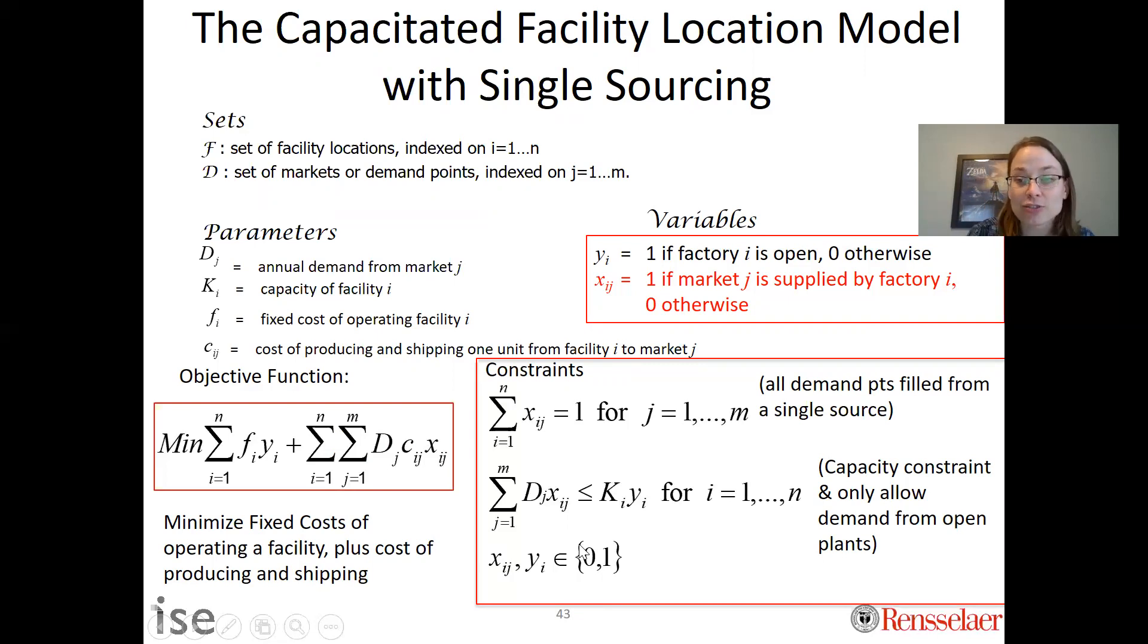In the constraints, remember xij is now binary and it basically says one facility has to supply each of these different demands. The constraint on capacity has to change because the x's are now binary decision variables.